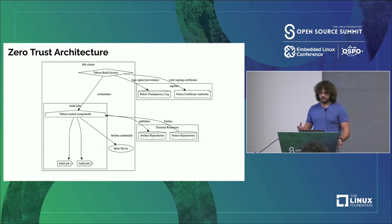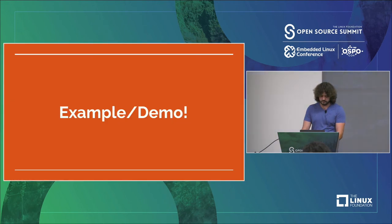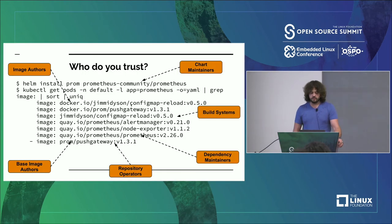Now we're going to jump into the actual demos, where we're going to take some containers and try to look everything up and prove where they came from. We'll first start with the anti-demo — we're going to take a Helm chart and try to trace everything back, and see all the places where we have to do guesswork and where bad things could have happened.